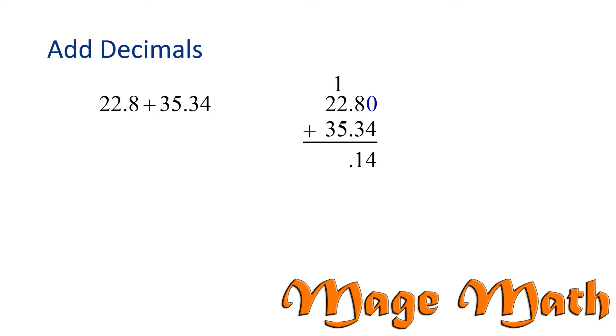Next, 1 plus 2 plus 5 is 8. And finally, 2 plus 3 is 5. We found the sum is 58.14.